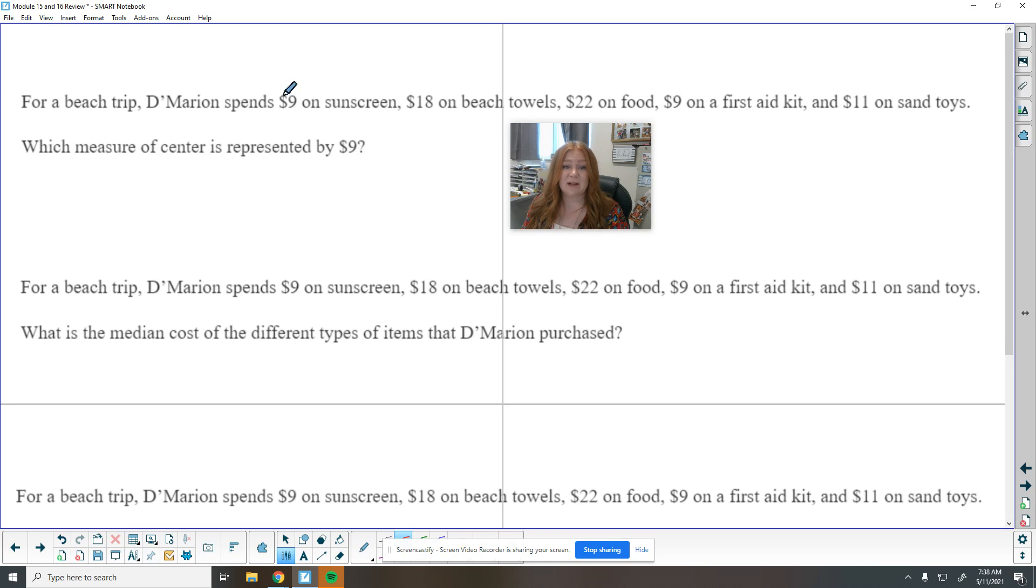For a beach trip, Marion spent $9 on sunscreen, $18 on beach towels, $22 on food, $9 on a first aid kit, and $11 on sand toys. So what measure of center, that's the mean, median, and mode, is represented by $9? So I'm going to put these numbers in order so I can kind of look at them a little bit better. So I've got nine on sunscreen, nine on a first aid kit. I've got 11 on sand toys, 18 on beach towels, and 22 on food.